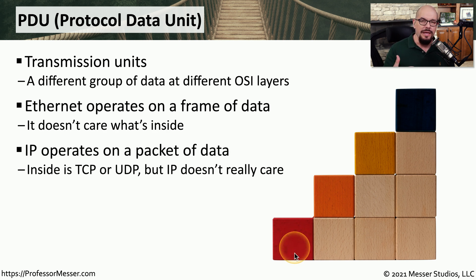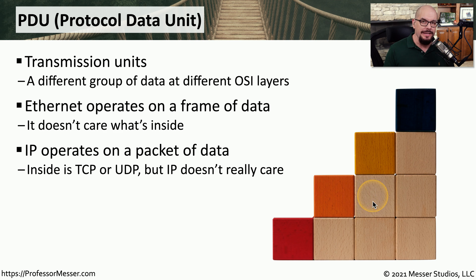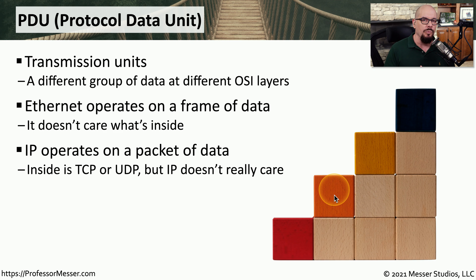A similar thing happens at the next layer up — layer three, or the IP layer — where everything within the IP layer is being sent across the network from one IP address to the other. Inside of that IP packet is UDP data, TCP data, or some other type of data. But IP doesn't care what's on the inside; it simply knows that it's moving data across the network from one IP address to another.